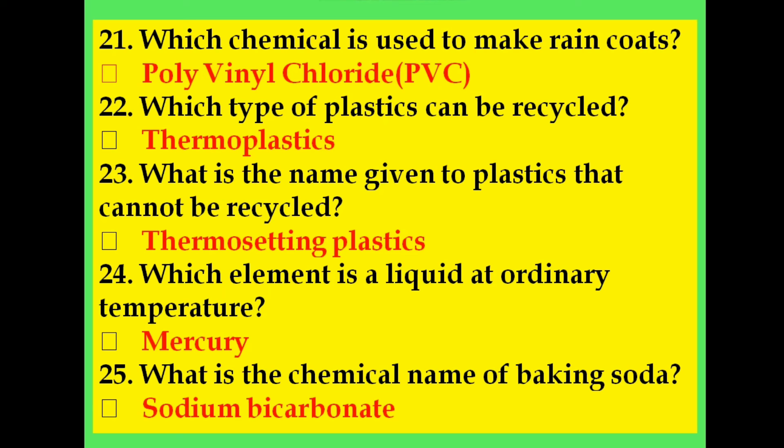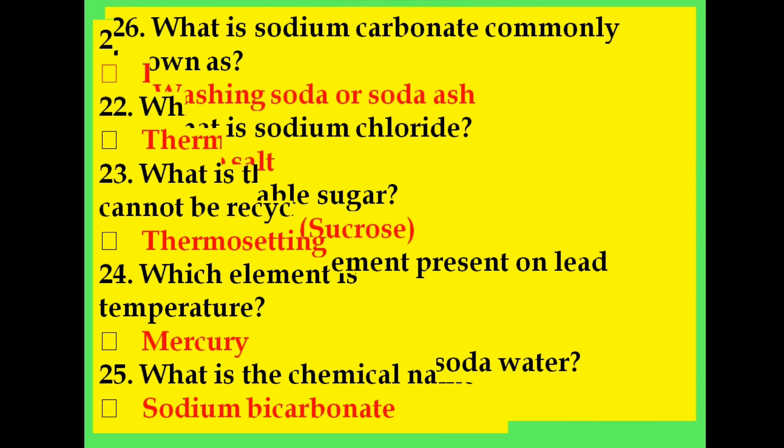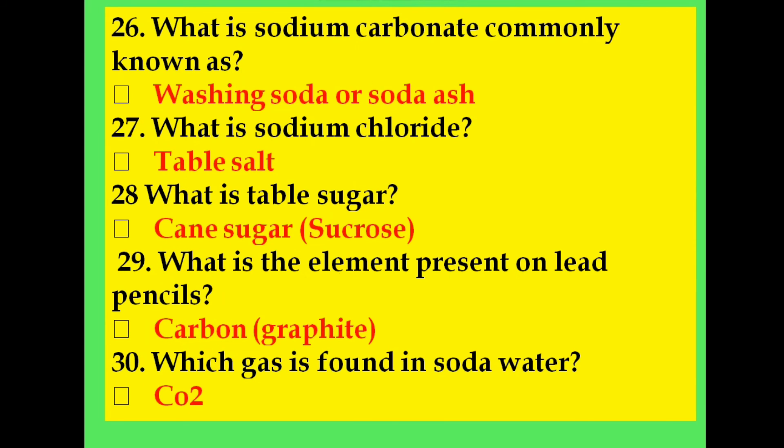Which element is liquid at ordinary temperature? Mercury. What is the chemical name of baking soda? Sodium bicarbonate. What is sodium carbonate commonly known as? Washing soda or soda ash. What is sodium chloride? Sodium chloride is also called table salt. What is table sugar? Cane sugar, that is sucrose. What is the element present in lead pencils? Carbon or graphite. Which gas is found in soda water? Carbon dioxide, CO2.